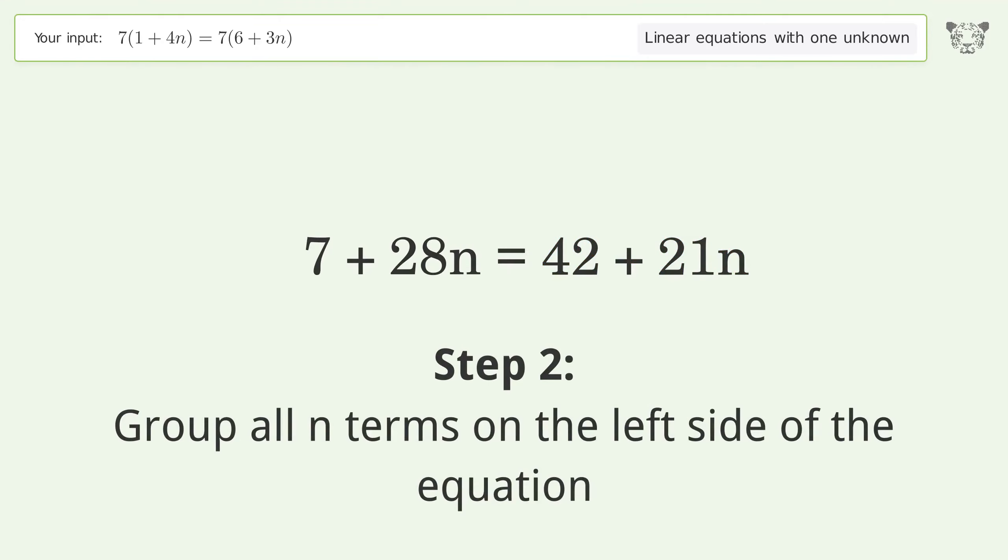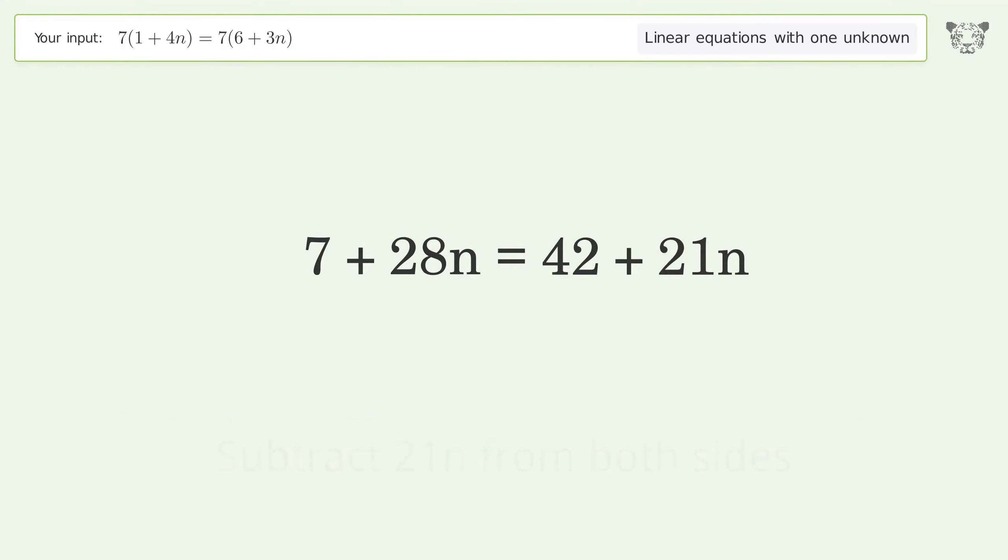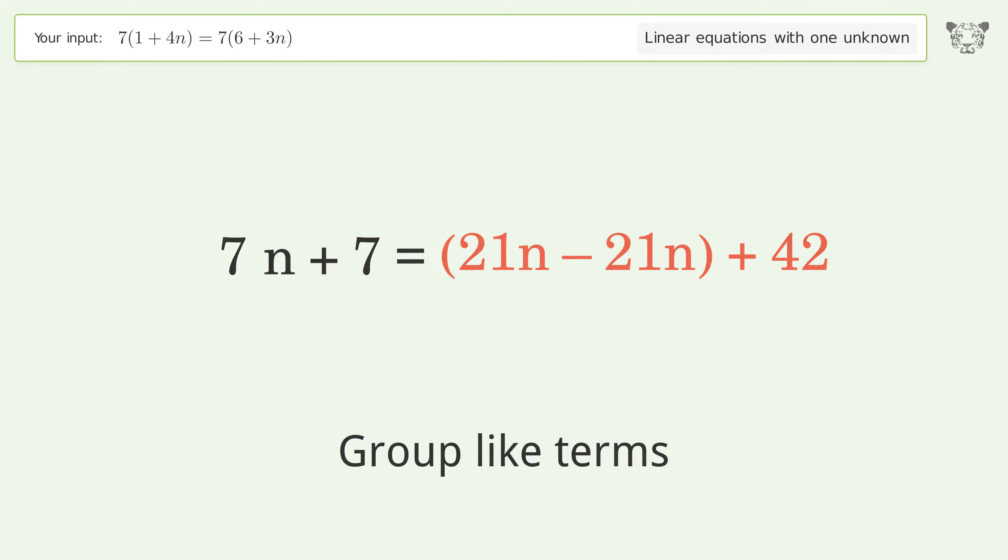Group all n terms on the left side of the equation. Subtract 21n from both sides. Group like terms. Simplify the arithmetic. Group like terms. Simplify the arithmetic.